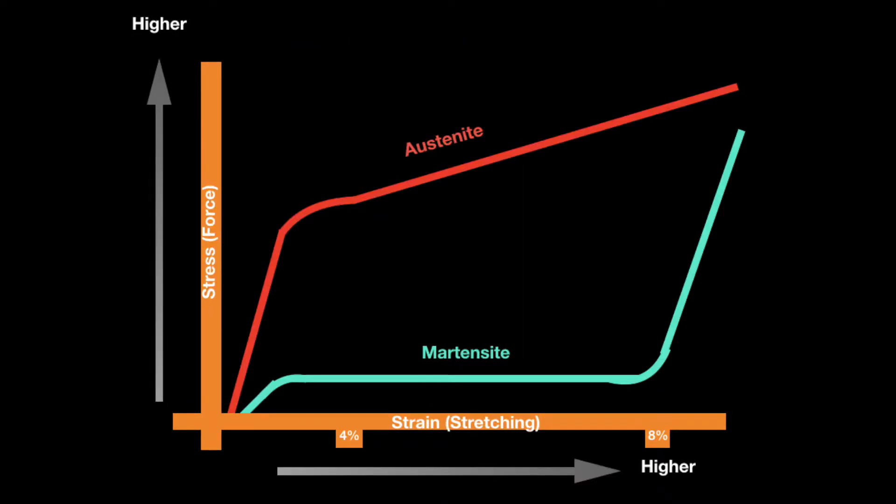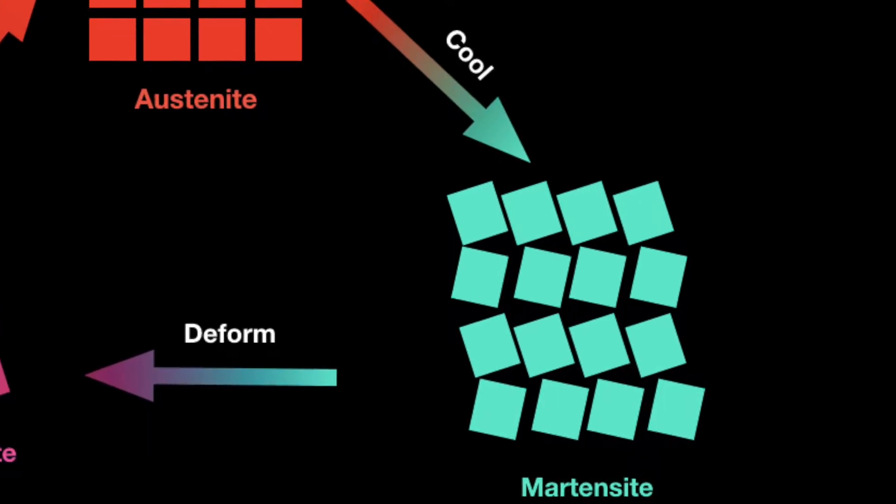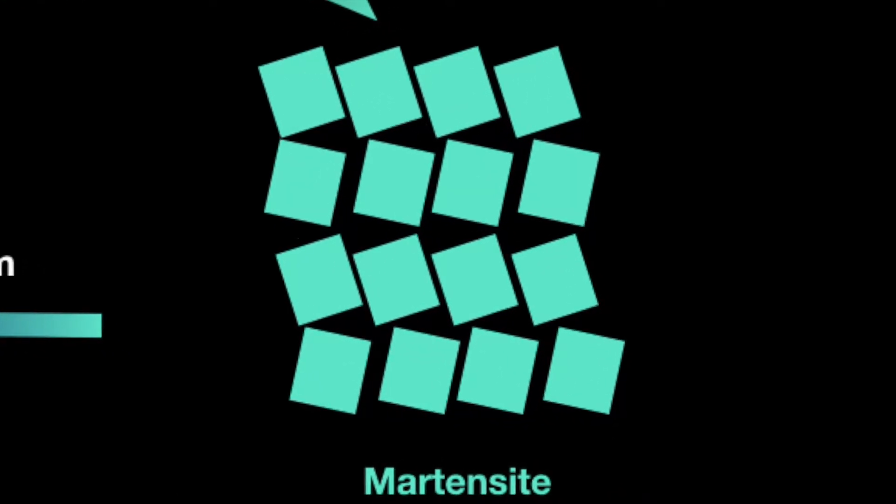If the material is below this temperature, the metal can be easily manipulated and it's in the Martensitic phase. When heated, it will return to its original shape, which is the Austenitic phase.